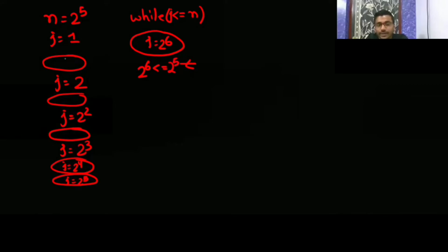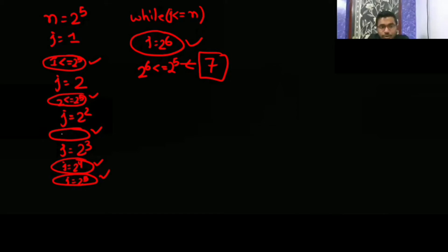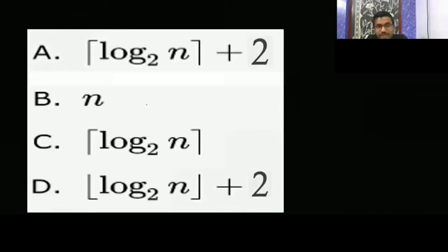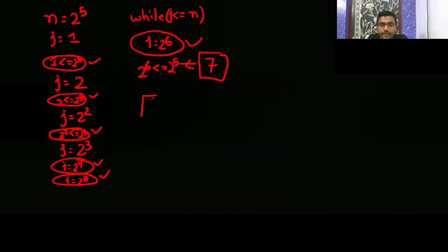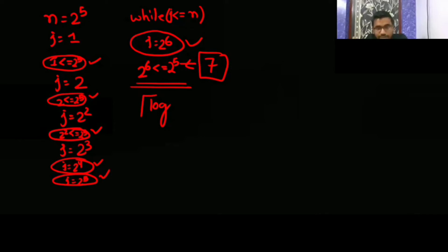So how many comparisons have you done? Count: 1 (j=1), 2 (j=2), 3 (j=4), 4 (j=8), 5 (j=16), 6 (j=32), 7 (j=64 fails). Total 7 comparisons. The last comparison — when j=2^6 and the condition fails — also counts. You need to count that last comparison too, because it checks and only then exits the loop.